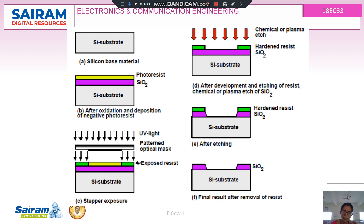Now, what is photolithography? The silicon substrate is taken, and oxidation is performed to form SiO2 on it. On the oxide layer, a layer of photoresist — a coating material — is applied. After oxidation and deposition of the photoresist, an optical mask is placed, which contains the pattern with openings where contact is to be made.